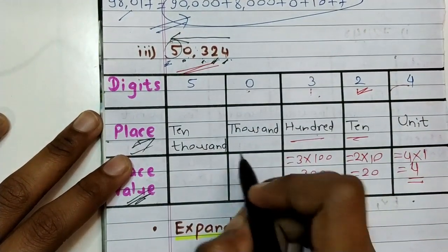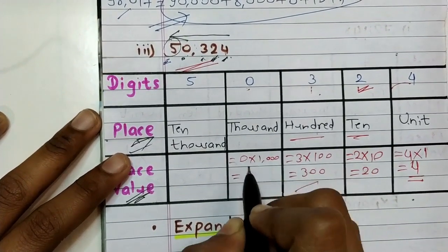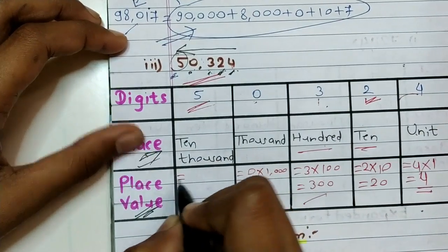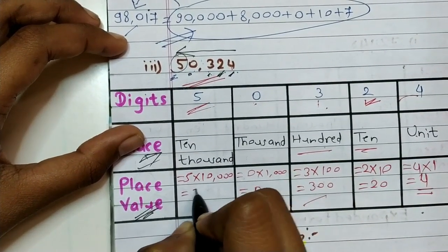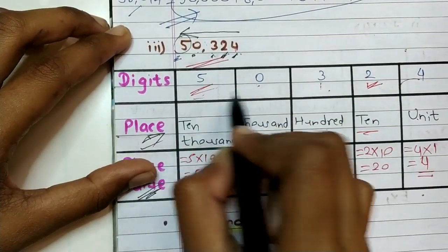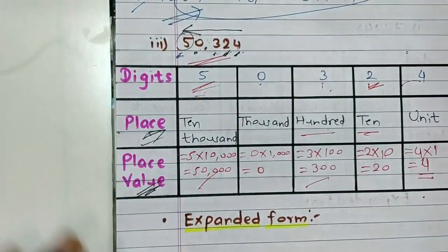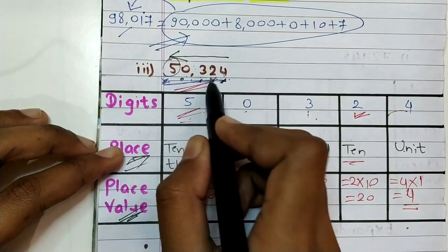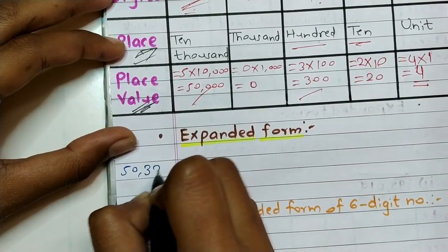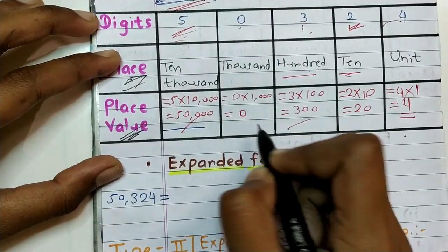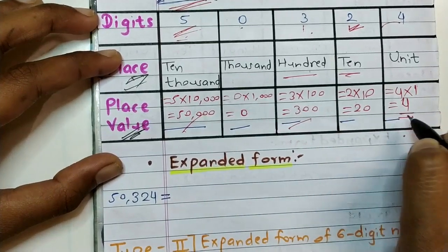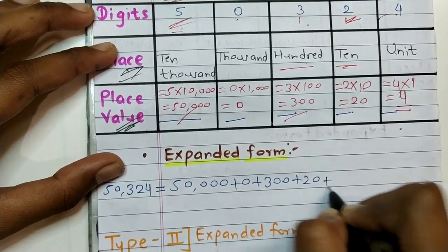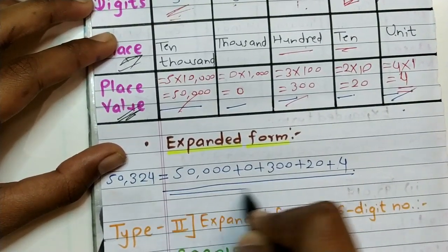Place value of zero equals zero into one thousand — multiplying zero by any number gives zero. And our last digit five: five into ten thousand equals fifty thousand. So the expanded form of 50,324 is: fifty thousand plus zero plus three hundred plus twenty plus four.